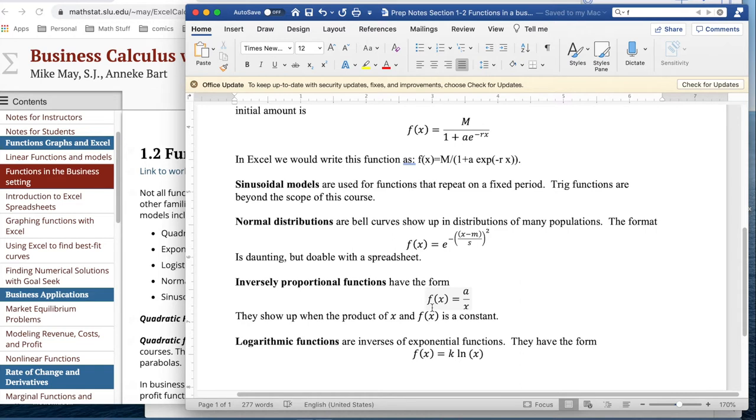Inversely proportional, f of x equals a over x, shows up when x and f of x, their product is constant. Think of the amount of material that goes into a box, and you have length and width. If you make the length less, the width can get greater.